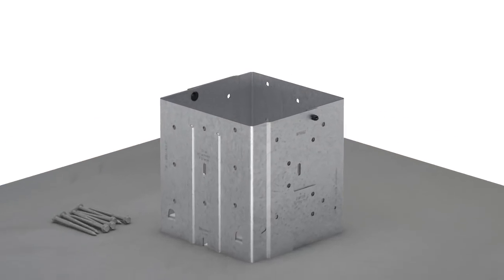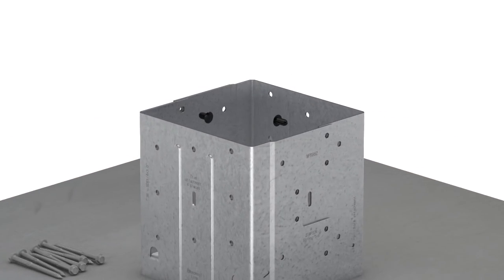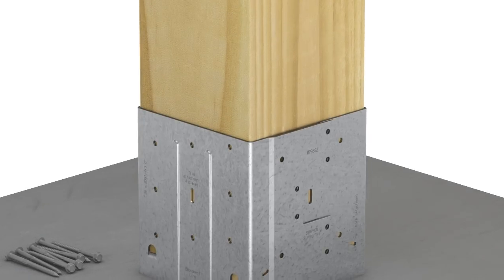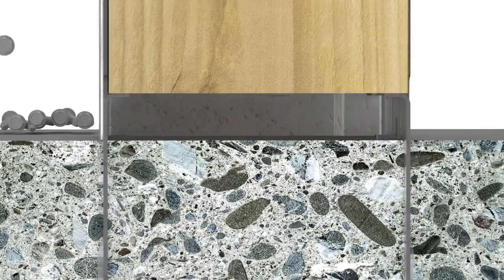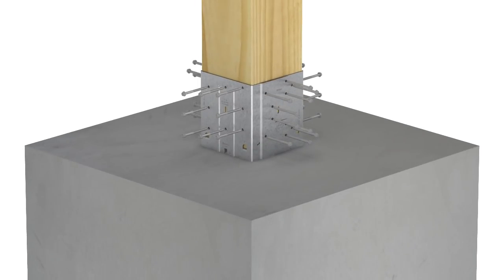After the concrete is set, remove the two plastic tabs at the top of the post base. Set the post into the MPBZ so that it rests on the four rounded standoff tabs. Fill all round holes with the SDS heavy-duty connector screws.